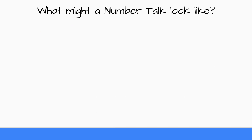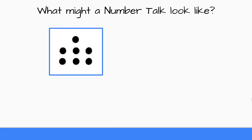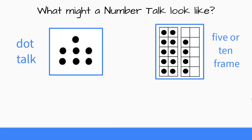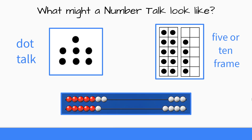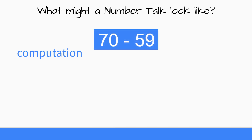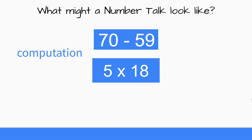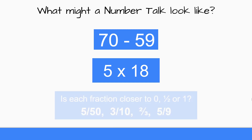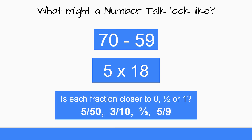What might it look like? It really depends on where your students are in their learning right now. It might be an image like a dot talk that we just did. It might have those dots arranged into 5 frames or 10 frames. Or you might have a rekenrek with the beads organized in a particular way to elicit particular strategies. It might be based on a computation written horizontally — so you might have an addition or a subtraction, a multiplication or a division problem. If you're looking at fractions, decimals, and percents, there's a whole book about that with problems you can use as a Number Talk.